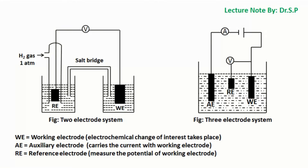The standard potential of the reference electrode remains constant in the three-electrode system. A current-potential curve can be derived in the two-electrode system only when passage of current via the reference electrode does not change its standard potential value, but in the three-electrode system we can derive the current-potential curve effectively.